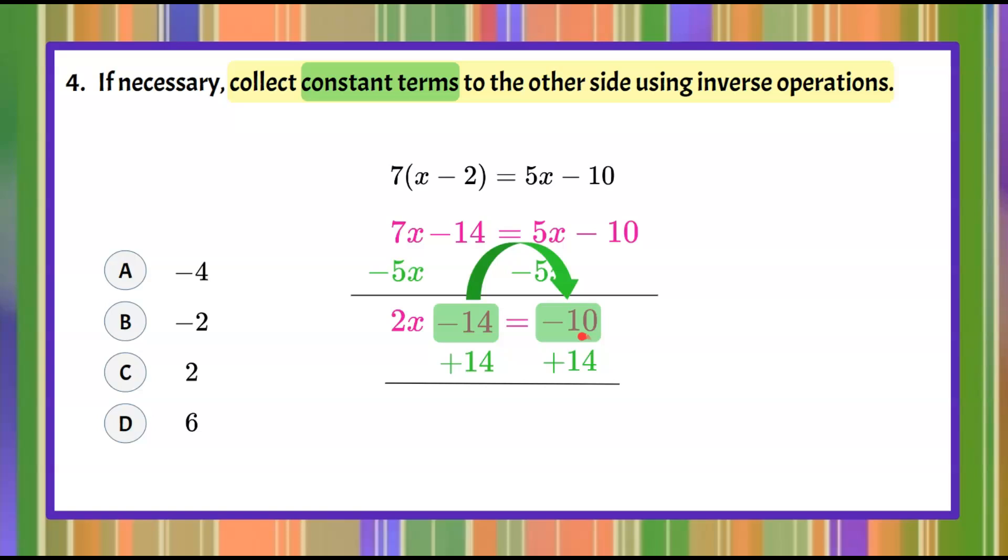So now let's combine 2x and our zero pair gives us 2x. Bring down our equal sign. Negative 10 and 14 is positive 4. Step four is complete.